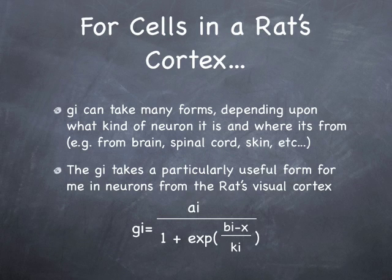Now, so different kinds of cells, these Gi's can take different kinds of forms for different kinds of cells, depending on what kind of neuron it is, depending on where it comes from, depending on the species of the animal that it comes from, yada yada, all this kind of stuff.